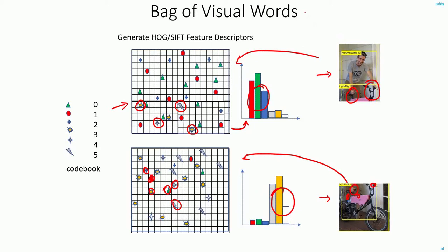So what is the use of this technique — bag of visual words? Using this technique, just by looking at the histogram, I can determine what kind of image it is. In the first histogram, I can look at it and say it might be a histogram of a person. In the second example, I can look at it and say this might be a histogram of a bicycle. That is, I'll see which codebooks are mostly dominating in the histogram and conclude that it pertains to the related object.